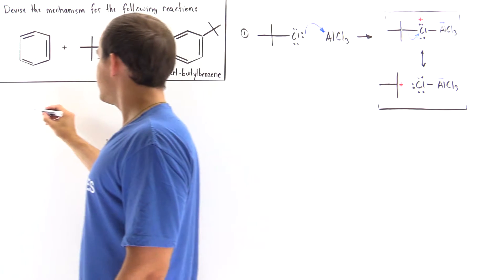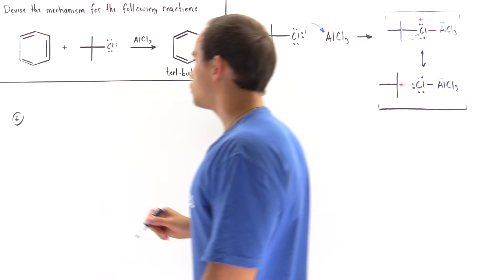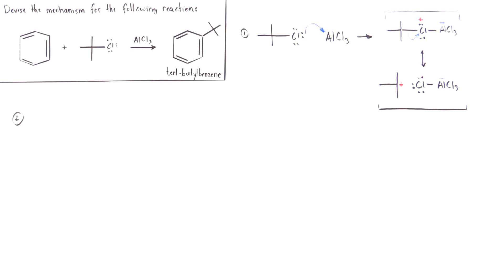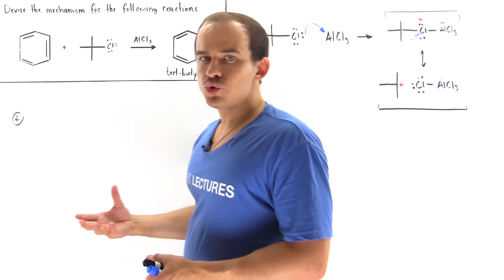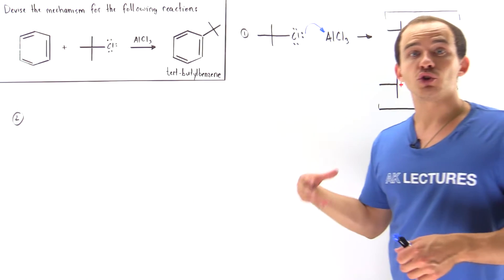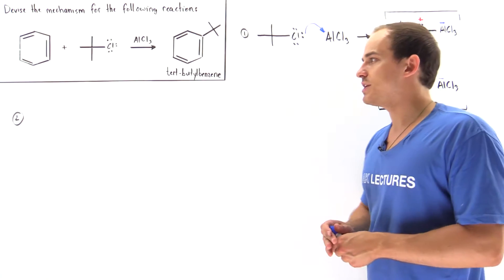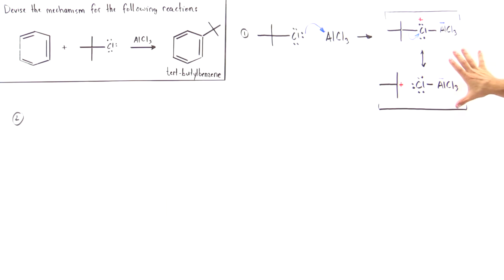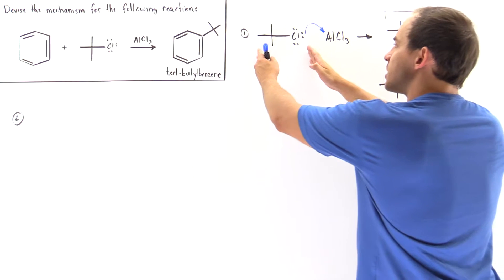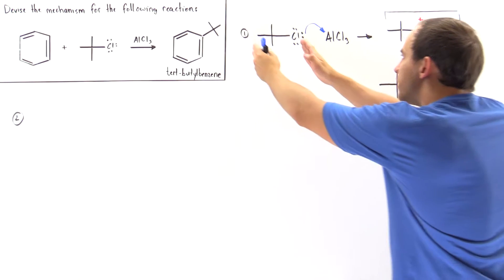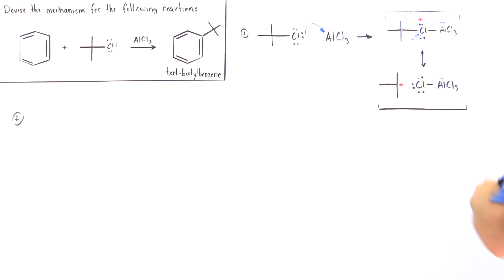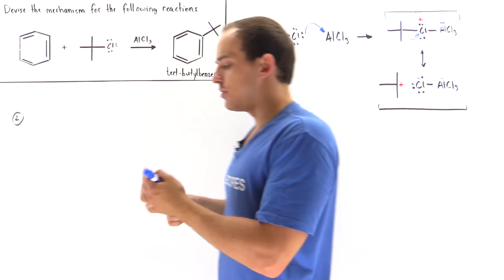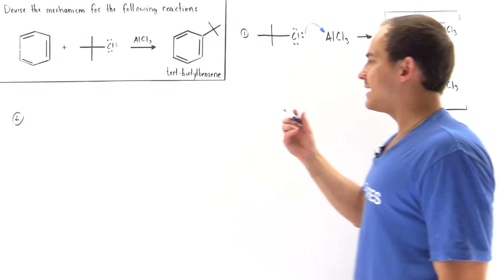Now, what exactly is our second step in this reaction? In the second step we have our electrophilic substitution reaction in which benzene, acting as our Lewis base and nucleophile, reacts with this strong Lewis acid — our good electrophile. This reaction created a good Lewis acid from a weak one, and now this good Lewis acid can react with our nucleophile, the Lewis base — our benzene molecule.